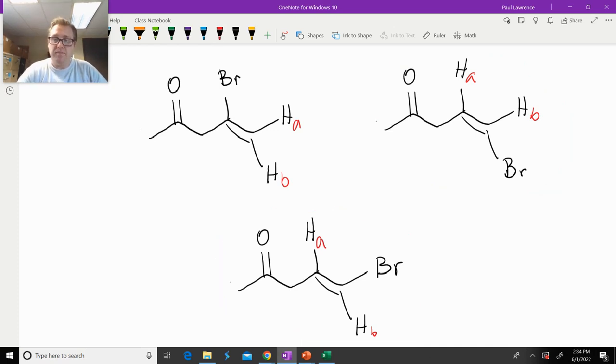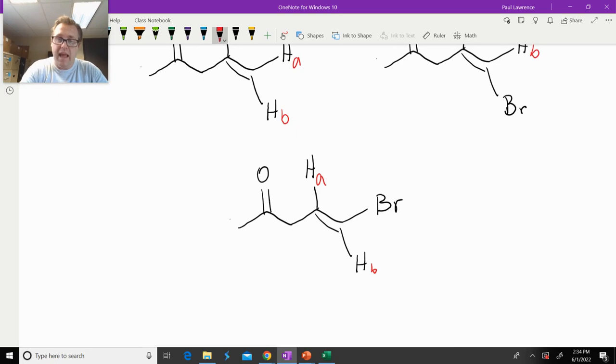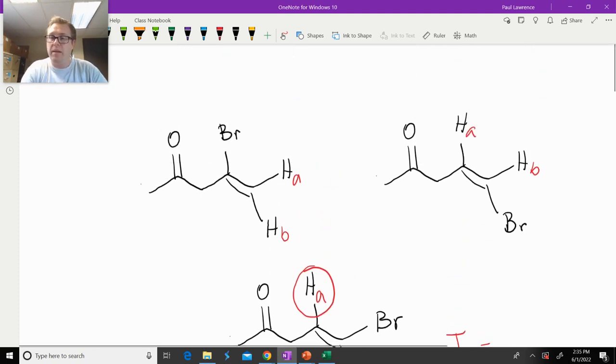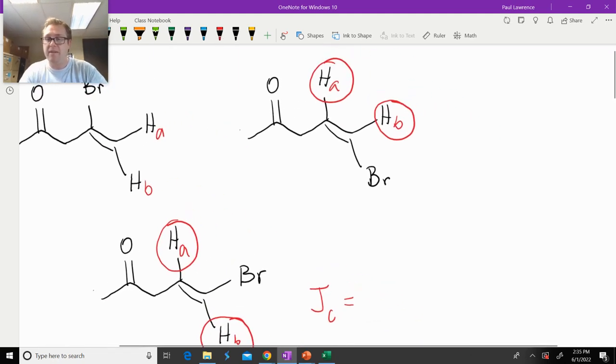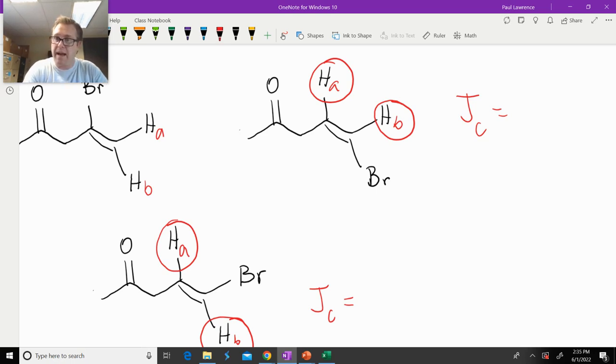So what we have here is H-A is going to couple with H-B. All right? And that's going to give us a J-coupling constant. All right? Whatever that is. But when you look at H-A, on this molecule on the top right, you see that it's going to couple with H-B and give us a J-coupling constant. What is it? Well, let me be more precise there. I'm asking the J-coupling for A. Okay? What is the J-coupling of A?